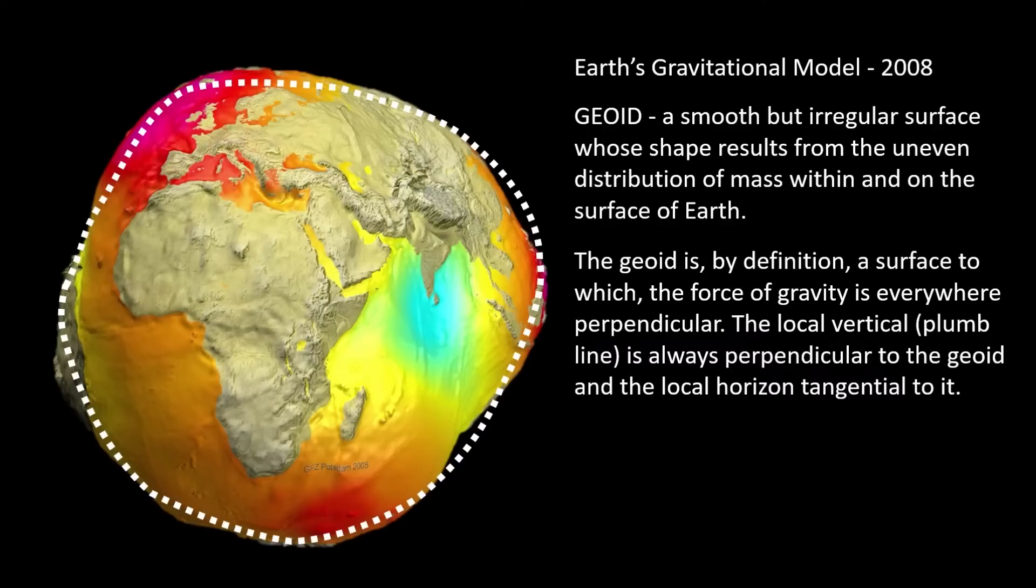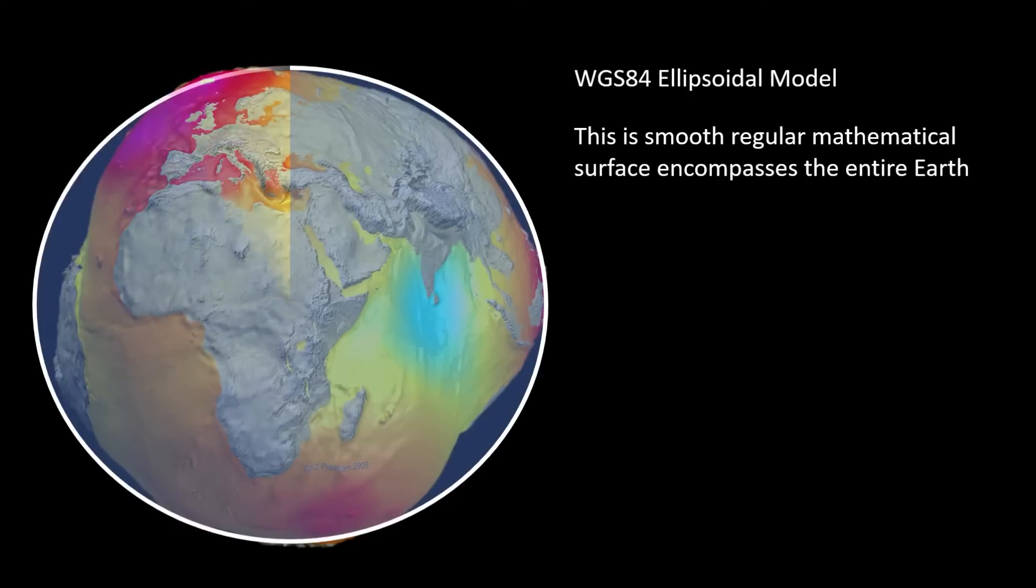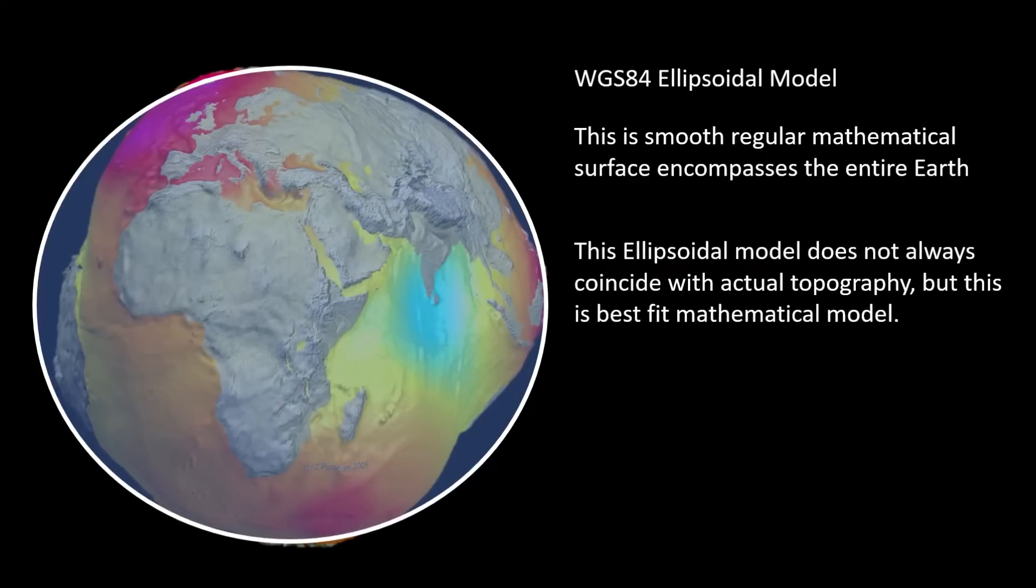This is the WGS 84 ellipsoidal model. This is a smooth, regular mathematical surface that encompasses the entire Earth. This ellipsoidal model does not always coincide with the actual topography, but this is the best fit mathematical model.